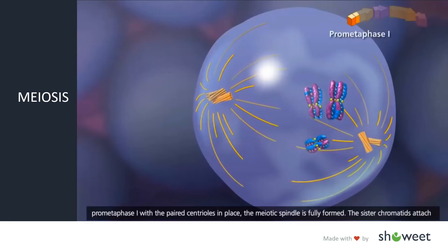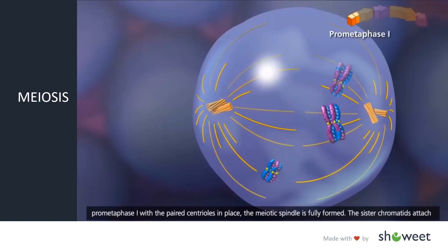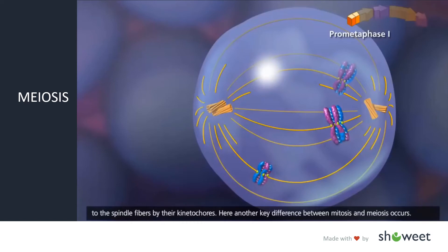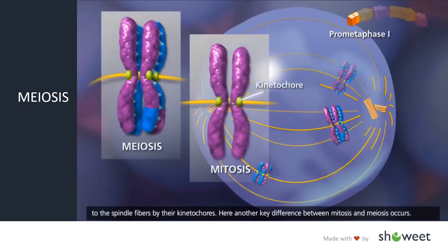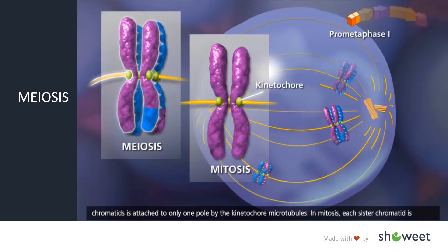In prometaphase I with the paired centrioles in place, the meiotic spindle is fully formed. The sister chromatids attach to the spindle fibers by their kinetochores. Here another key difference between mitosis and meiosis occurs. Because of synapsis and crossing over in meiosis, homologous chromosomes remain aligned, so that a pair of sister chromatids is attached to only one pole by the kinetochore microtubules.